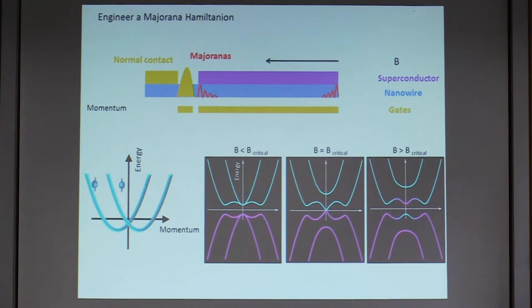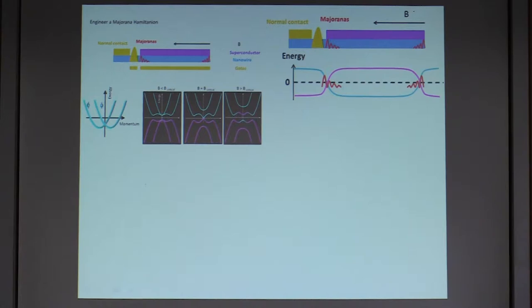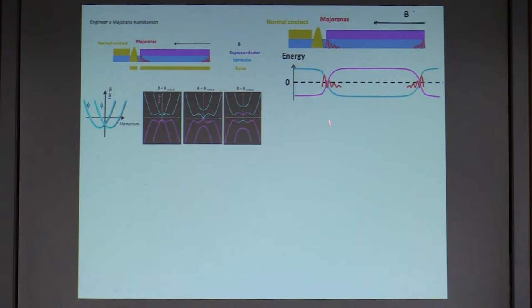This was the momentum space picture. In real space, in the region where the magnetic field is larger than the critical field, you are in the inverted band regime. Comparing to conventional semiconductor language, the valence band now goes to the conduction band and vice versa — the band is inverted. At the ends, these bands have to cross each other, and they cross at zero energy because of particle-hole symmetry. This crossing point is where the Majorana bound state is created, and because of particle-hole symmetry the energy is always zero. It always comes in pairs localized at the two ends.